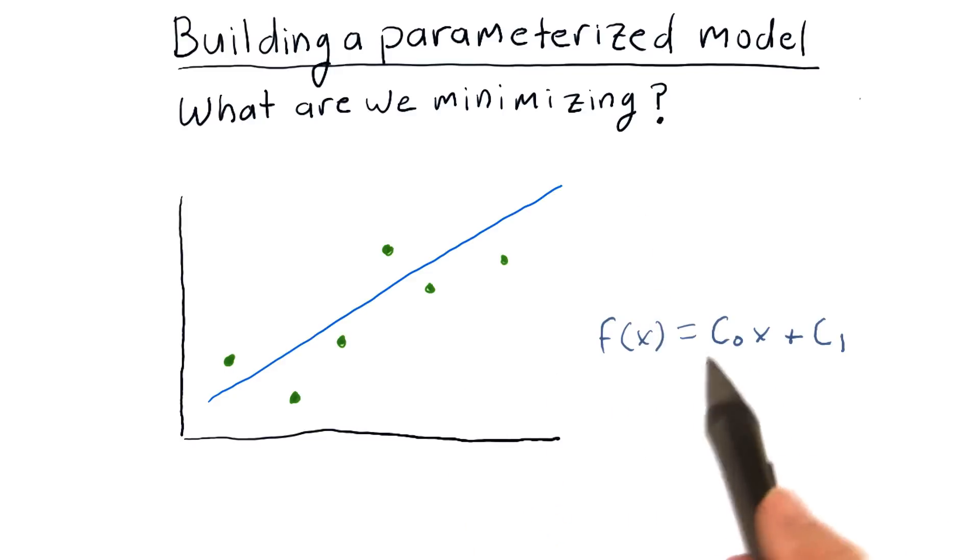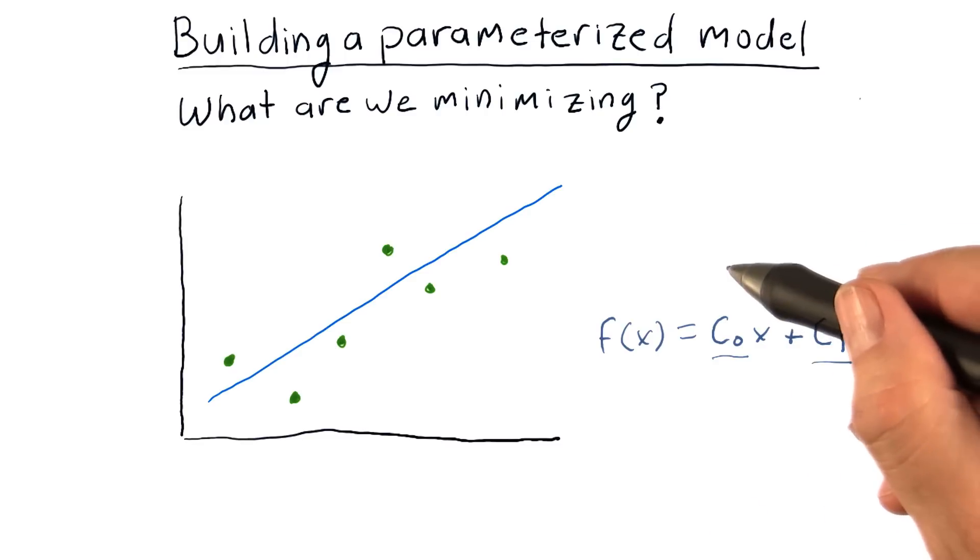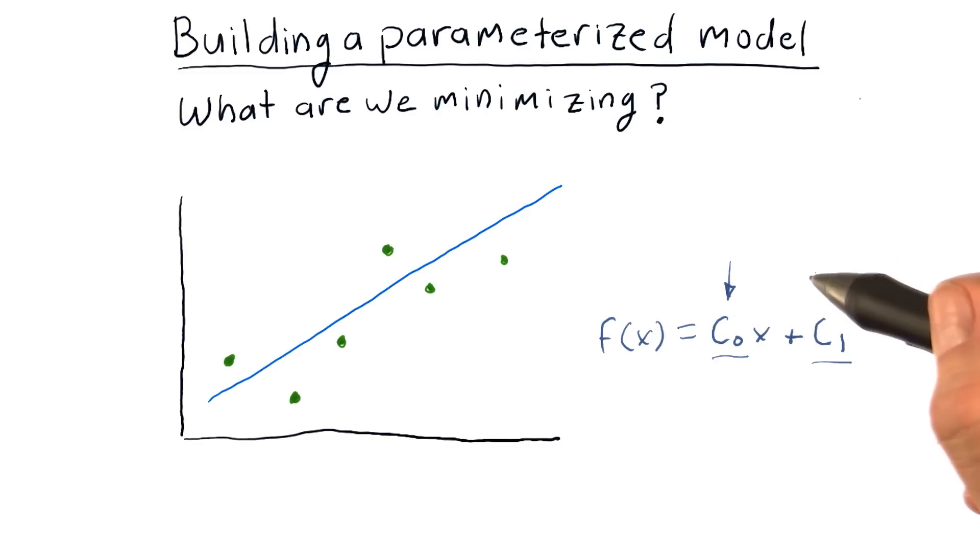So the equation for that line is our first coefficient times x plus the second coefficient. And what the minimizer is going to do is it's going to vary this c0 and c1 to try and minimize something.